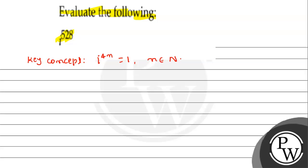Iota to the power 4n is 1. Now, if we look at the expression, we need to find the value of iota to the power 528.